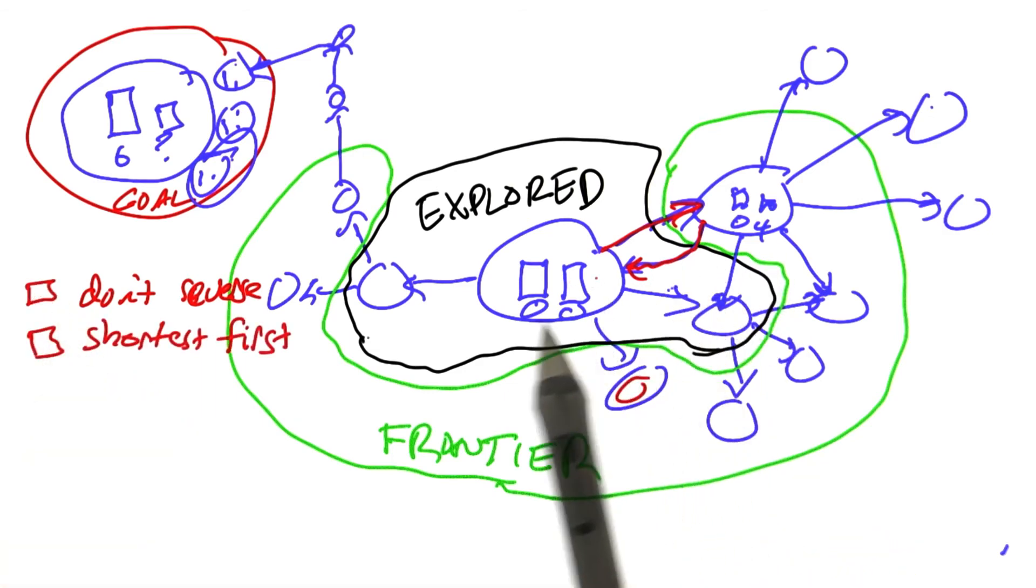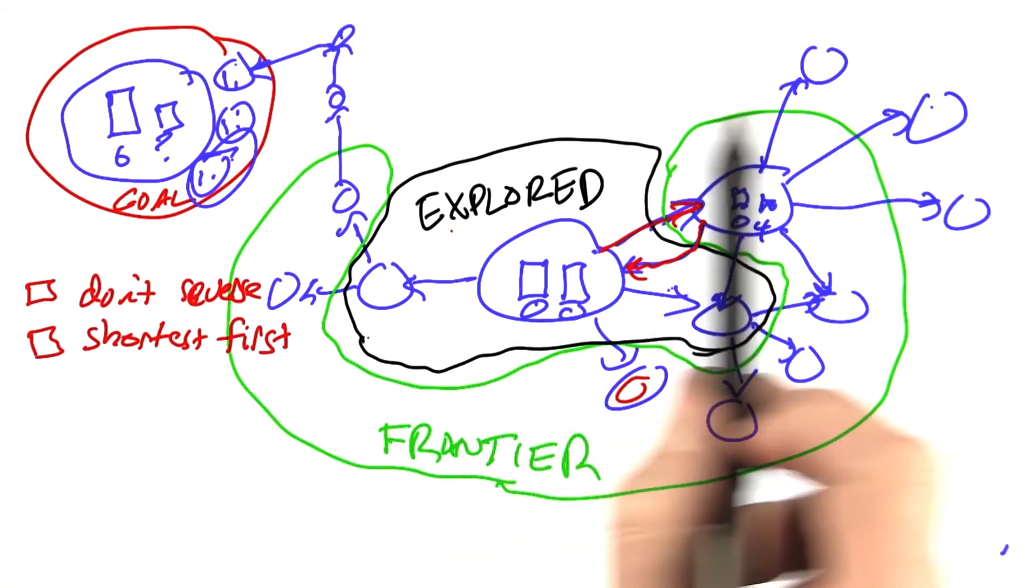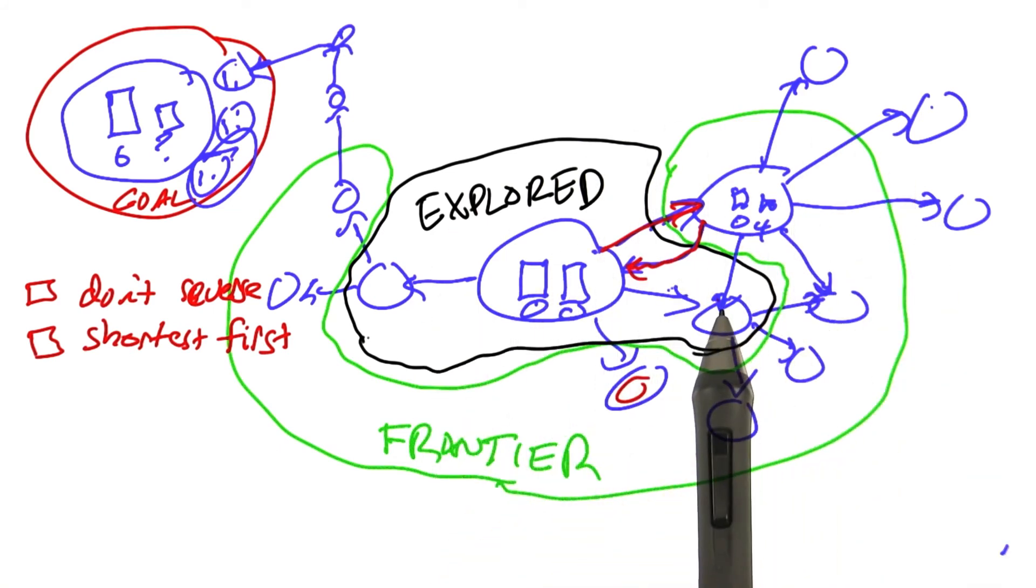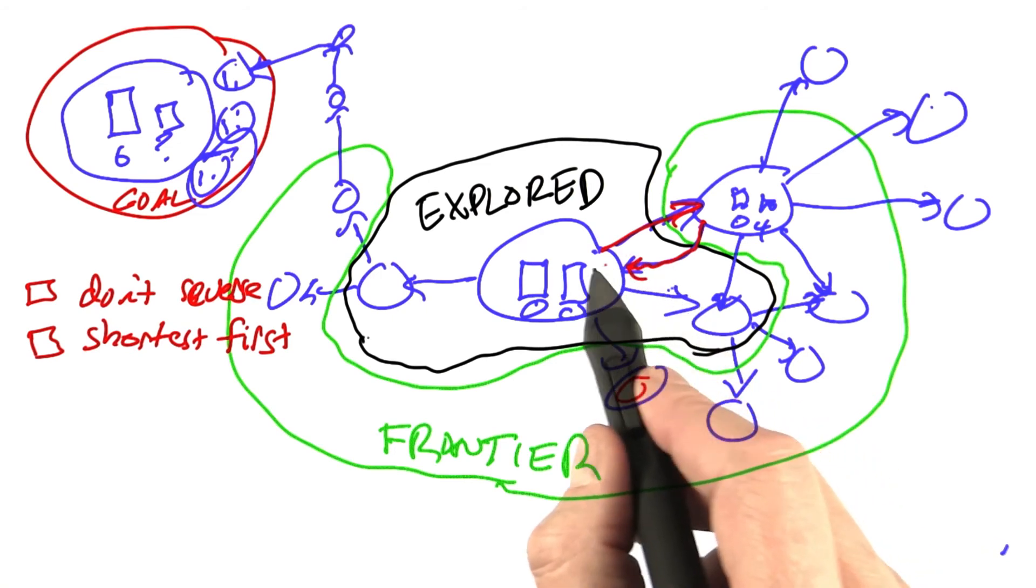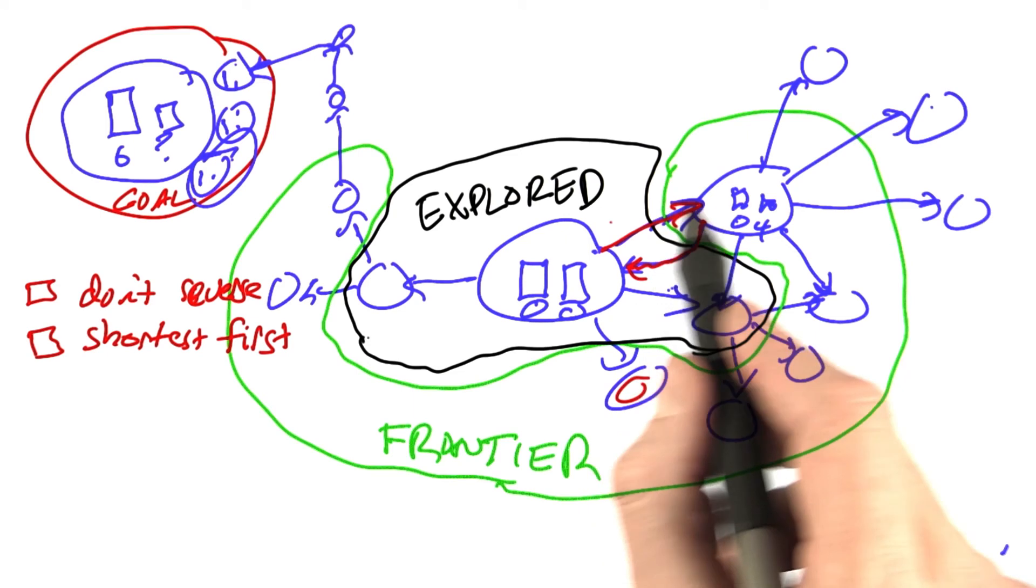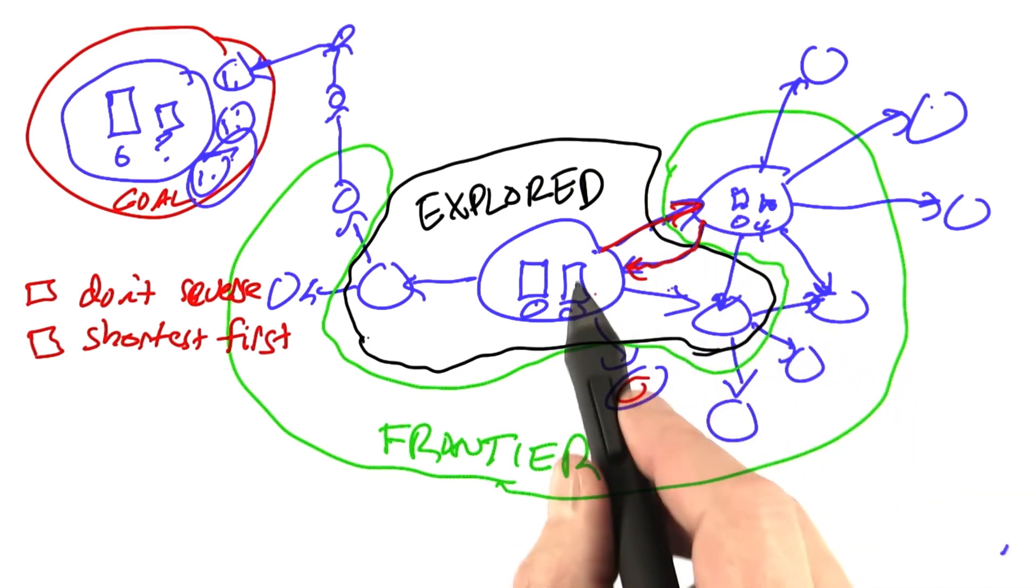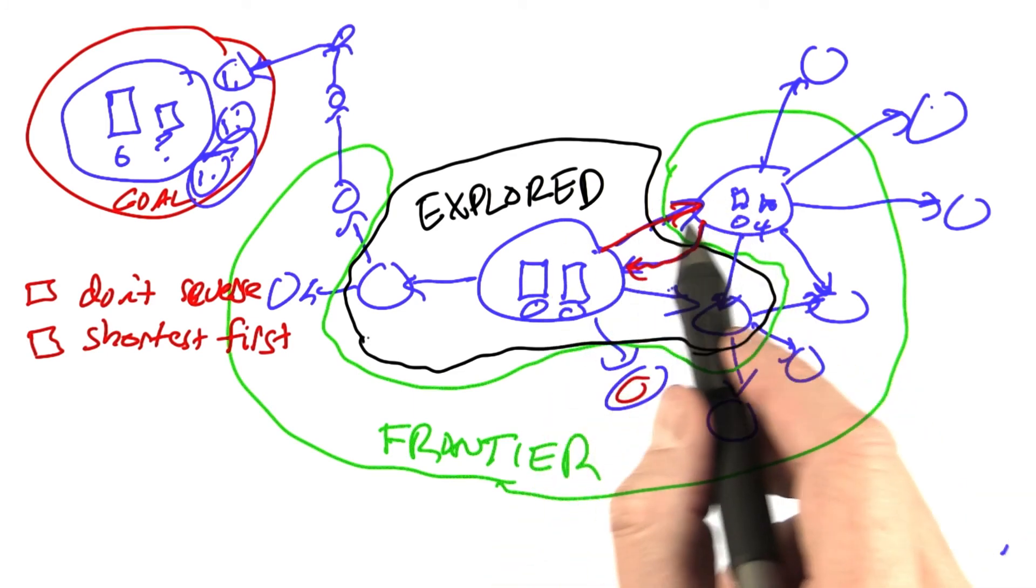Another strategy would be to say always take the shortest path first. Out of all the paths that you've built so far, when we go to choose which one are we going to expand next, always choose one of the shortest ones. That way, we might start to build up an infinitely long path, but at least we won't continue it first, we'll do another one before we do that one.